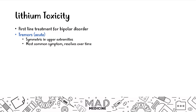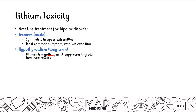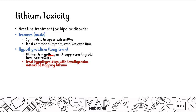The long-term effects of lithium include hypothyroidism. Lithium acts as a goitrogen, meaning it suppresses the release of thyroid hormone. Patients are going to present with classic hypothyroid symptoms — fatigue and weight gain. The way you treat lithium-induced hypothyroidism is simply by giving those patients levothyroxine. You don't want to stop lithium in this case because there's a simple fix and these patients usually need lithium to prevent recurrence of bipolar manic symptoms. Very high yield.